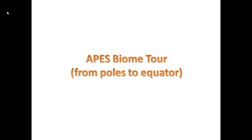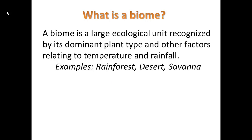Hello, in this video we're going to take a tour of the major biomes of the world from the poles moving toward the equator. A biome is a large ecological unit recognized by its dominant plant type and other factors relating to temperature and rainfall. So we're especially looking at the average yearly temperature and the rainfall — those are the two key factors.